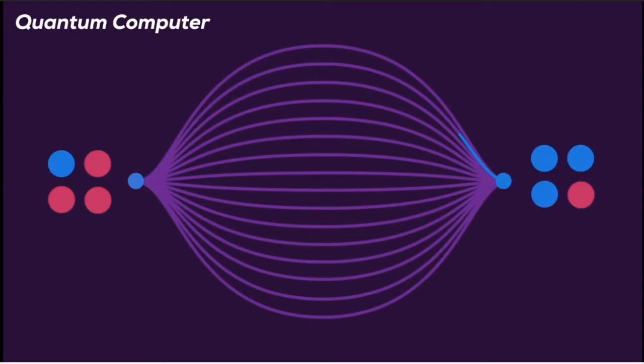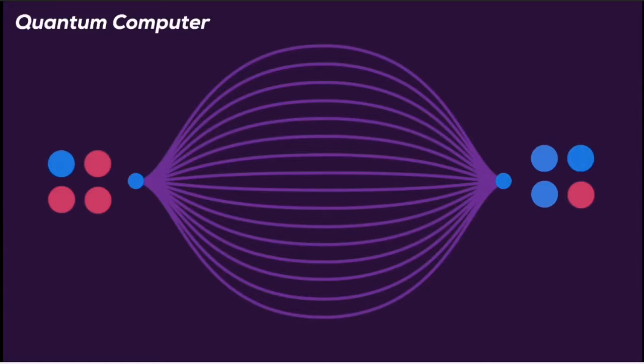However, you can only measure one result, so it may not be the one you want, and you must check and try again. But by clearly exploiting superposition and entanglement, this can be exponentially more efficient than it would be on a classical computer.